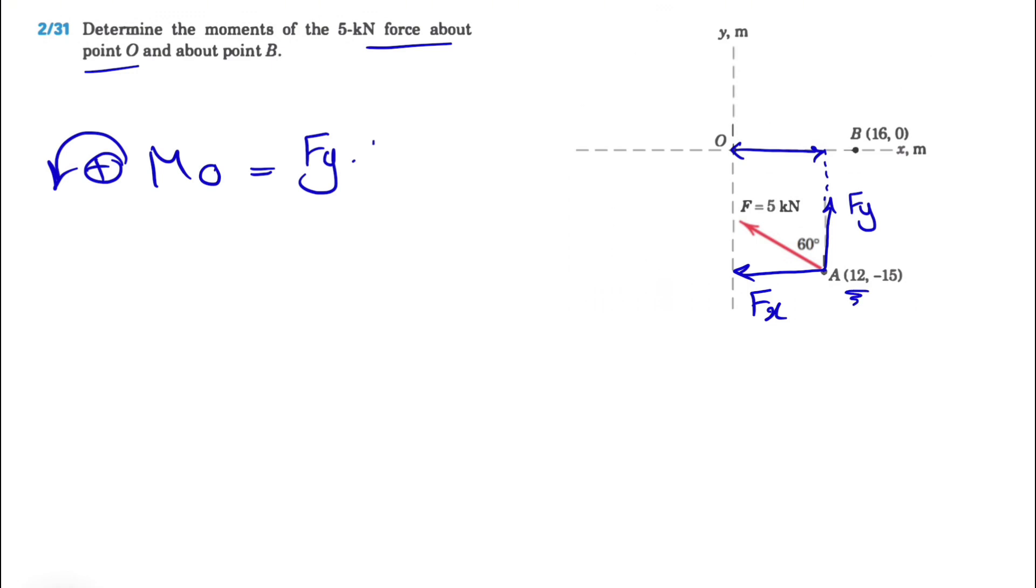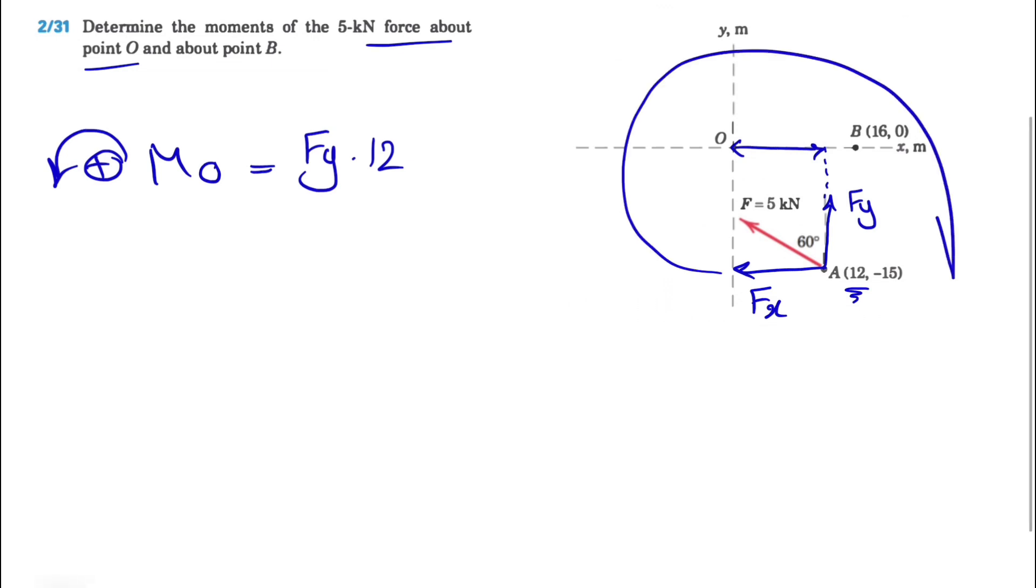Basically we have to figure out the movement on the X axis. We are from O, which is the origin, to the X component of A, which is 12. So basically we have 12 in here. That's pretty much everything for moment of FY.